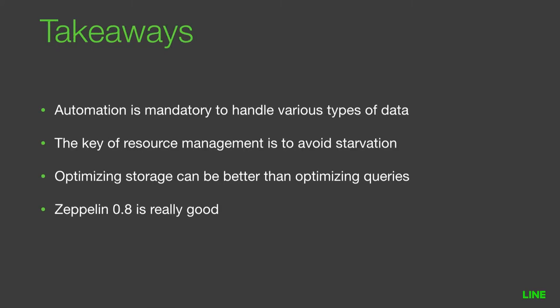Key takeaways: First, automation is mandatory to handle various types of data. Without automation, you'll spend all your time operating the cluster and meeting to discuss new data types instead of building infrastructure. Second, in my experience, users don't want their jobs to be in a queue — they want to start immediately even if it finishes slowly. Third, sometimes optimizing storage can be better than optimizing queries. Finally, Zeppelin 0.8 is really good — give it a try.